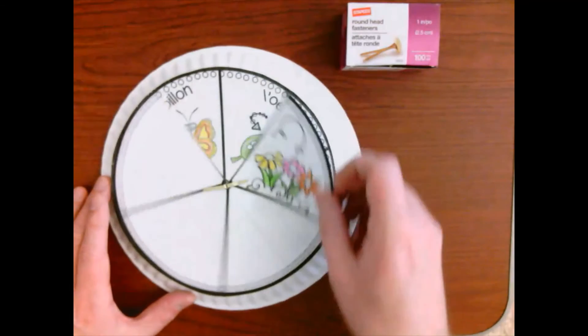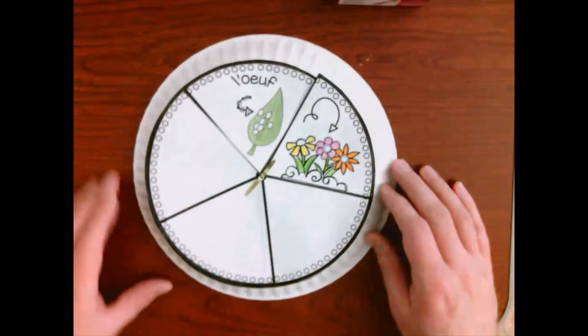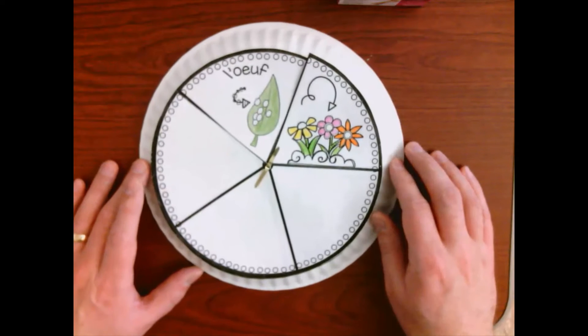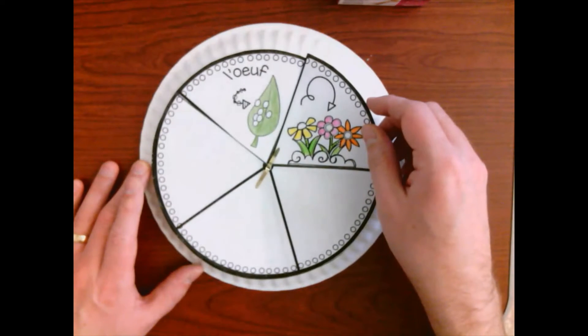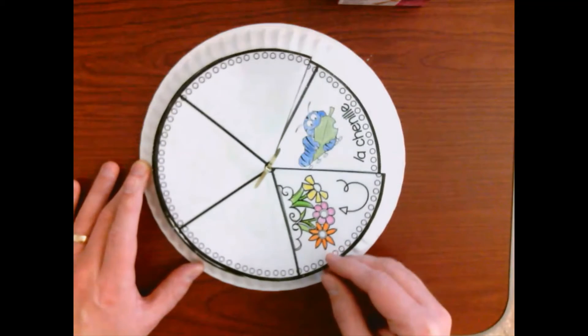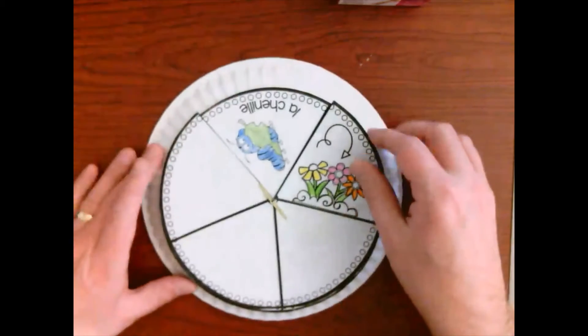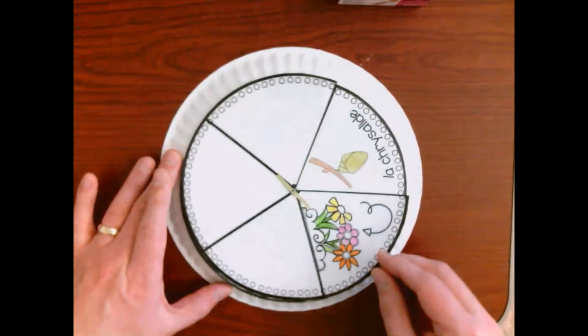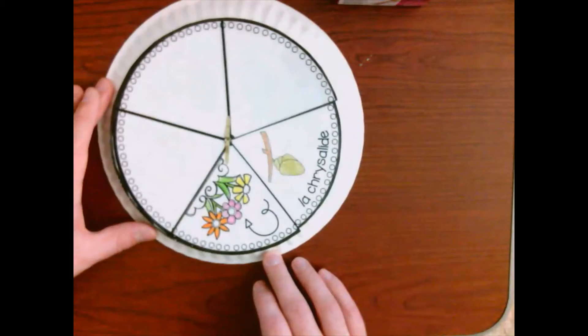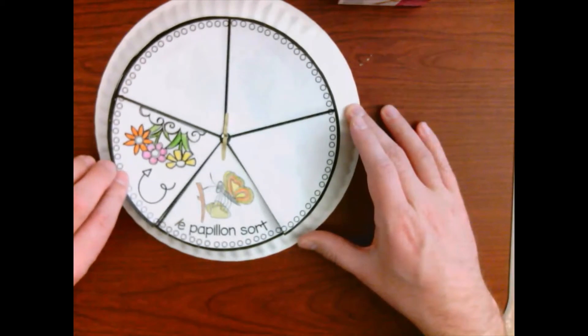So, quels sont les parties de le cycle de vie d'un papillon? Un adulte prend les oeufs, les oeufs deviennent chenilles, le chenilles mange les feuilles, deviennent chrysalides, un chrysalide sort comme un papillon.